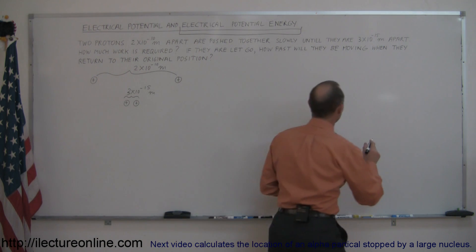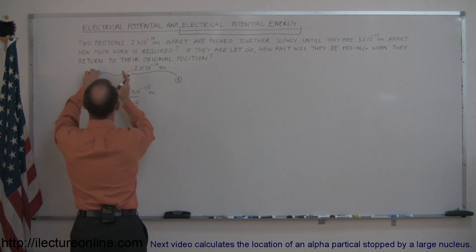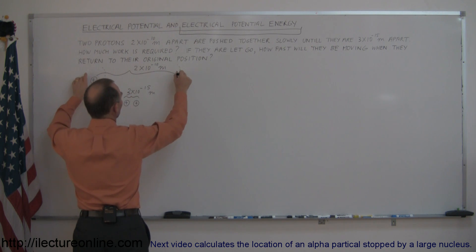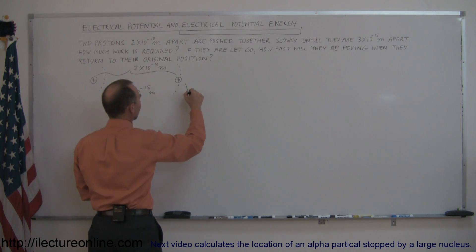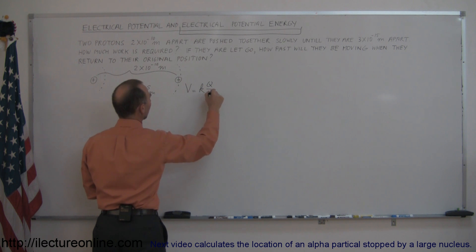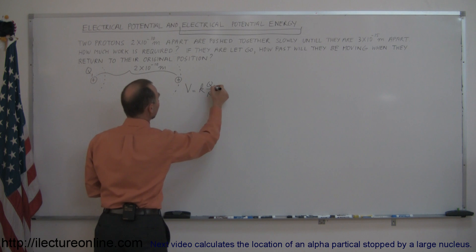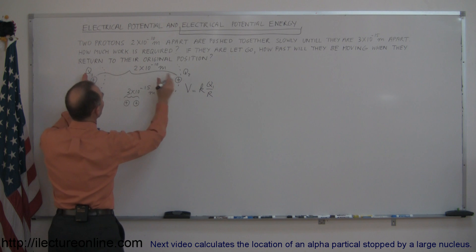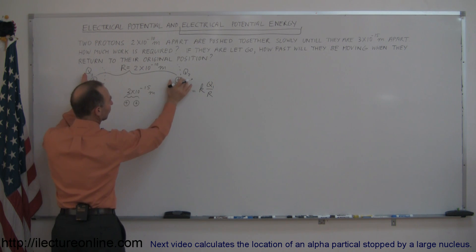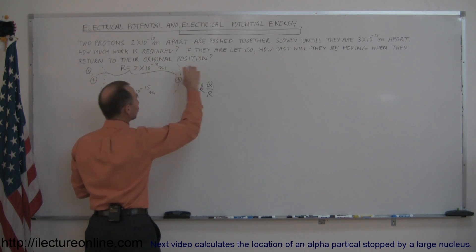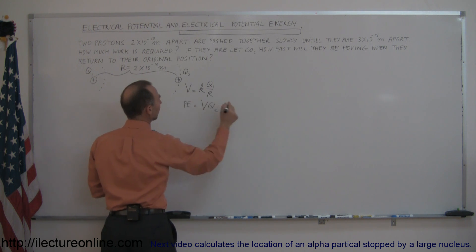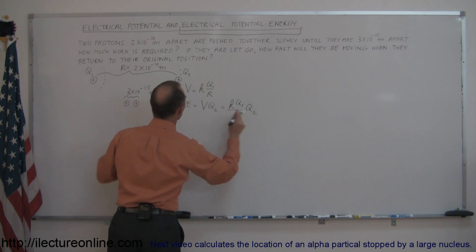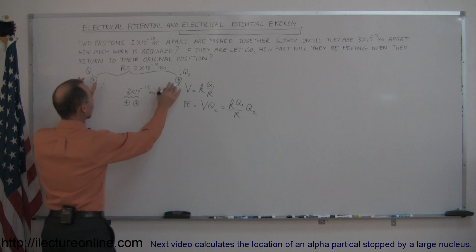Let's write some equations down to get a feel for this. If we assume this one is stationary and we bring the other one closer, the potential at this location due to the charge can be expressed as V equals KQ over R. Let's call the charges Q1 and Q2, and R is the distance between them. If we move Q2 there, the potential energy is equal to the potential at that location times Q2, which gives us KQ1 over R times Q2. That's the current potential energy the system has when those two charges are that far apart.